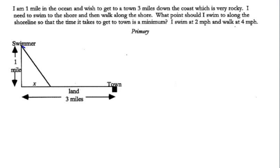A swimmer swimming directly to town at two miles per hour is, thought experiment wise, going to take quite a bit more time than going directly to shore and then going along the shoreline. So there's going to be some point at some angle theta that's going to be optimum time-wise, going along the diagonal path and then along the shore. Let's go ahead and look at what's going on here.